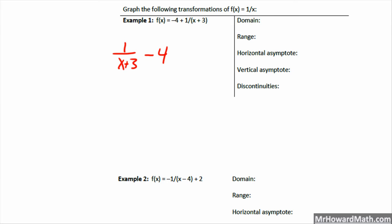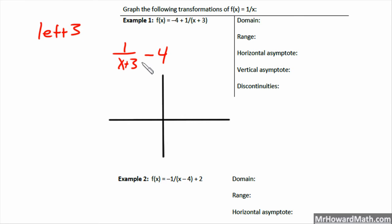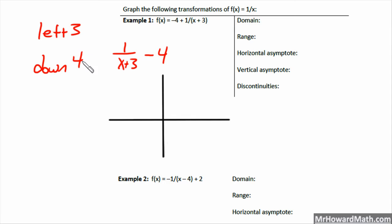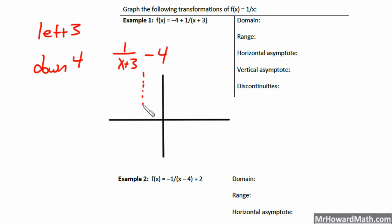We'll make a sketch with a coordinate plane. The transformations for rational functions are the same as all other functions. When a value is with x, it's left and right — opposite of the sign — so x plus 3 means left 3. Out away from x, it's up and down with the sign, so minus 4 means down 4. We'll move the vertical asymptote left 3, placing it as a dashed line to the left of the y-axis.